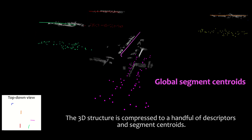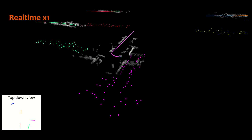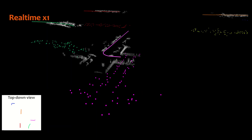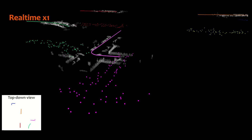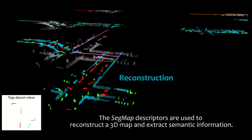The 3D structure is then compressed to a handful of descriptors and segment centroids. The SegMap descriptors are used to reconstruct the 3D map and extract semantic information.